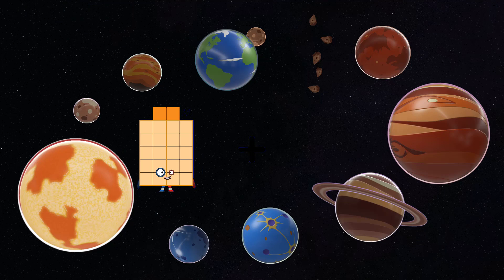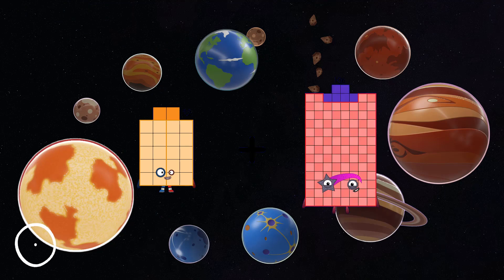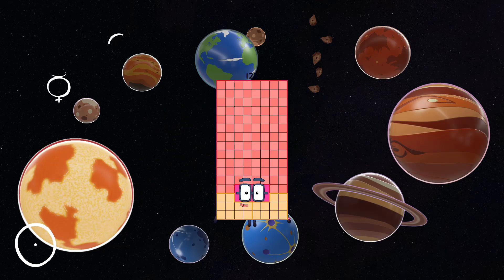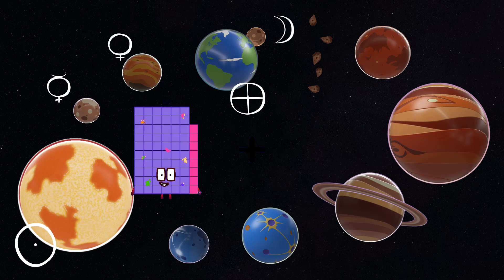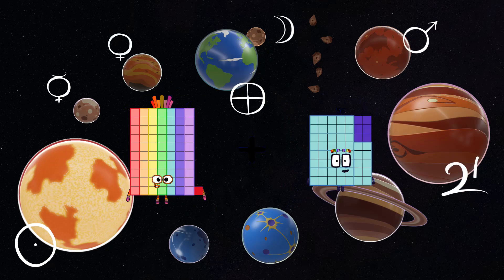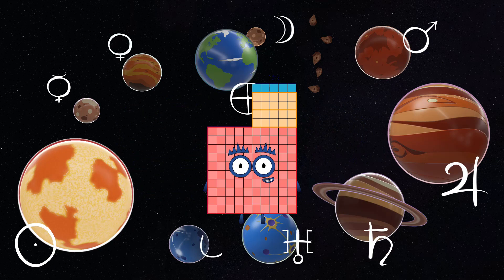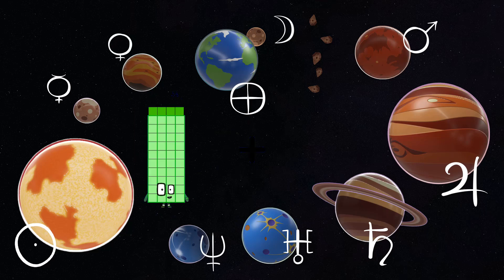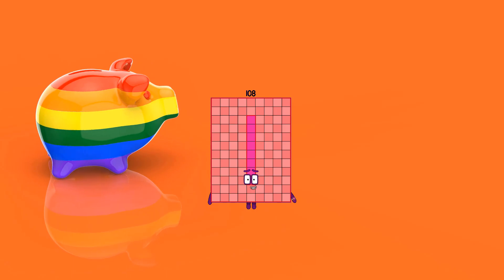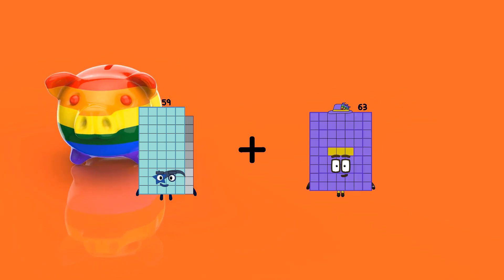22 plus 106 equals 128. 71 plus 54 equals 125. 44 plus 64 equals 108. 59 plus 5 equals 64.